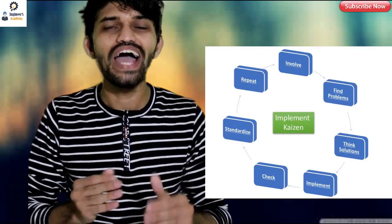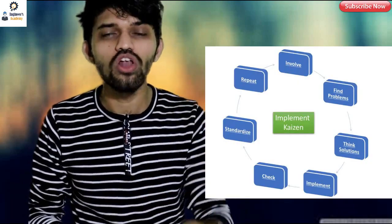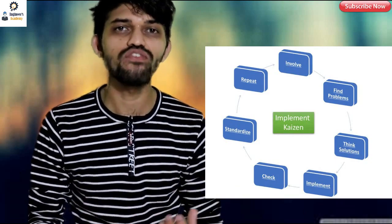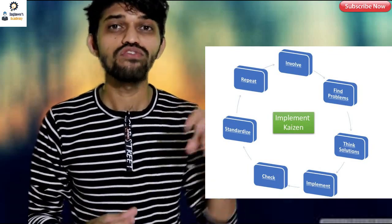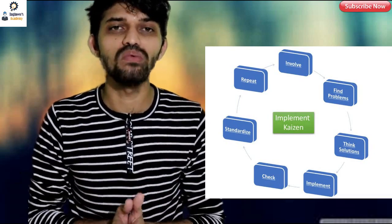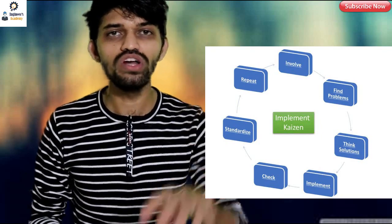That is how Kaizen can be implemented in any organization to improve productivity. To implement Kaizen in any department, first we need to decide what we want to improve. We have to get involved — in production, in quality, in sales, in the department itself — and find out what problems the particular people are facing right now.